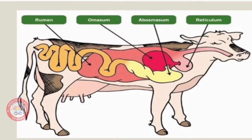Look at the digestive system of a cattle animal. Its digestive system is unique because its stomach has four chambers: rumen, reticulum, abomasum, and omasum.